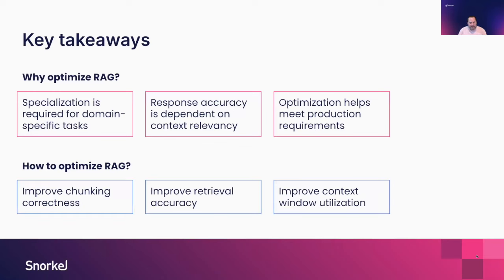In terms of how we optimize RAG pipelines, there are three basic areas we'll touch on today. The first is improving chunking correctness — given a very large PDF document, how can we properly chunk it into smaller pieces that are whole and relevant? The second is improving retrieval accuracy, ensuring we identify and retrieve only the most relevant chunks for a specific question. The last is improving context window utilization — how can we best fill it with relevant information to get a great response? All of this comes down to data in one shape or form.